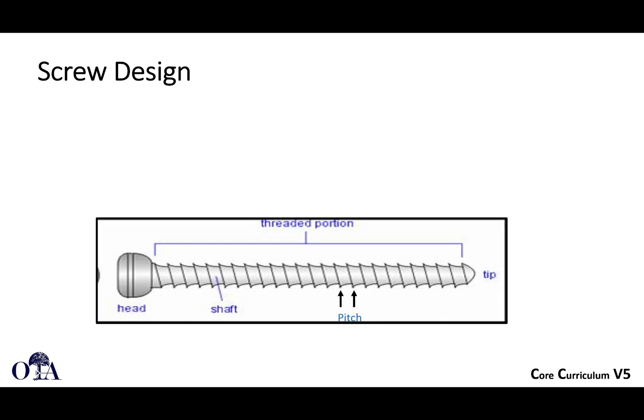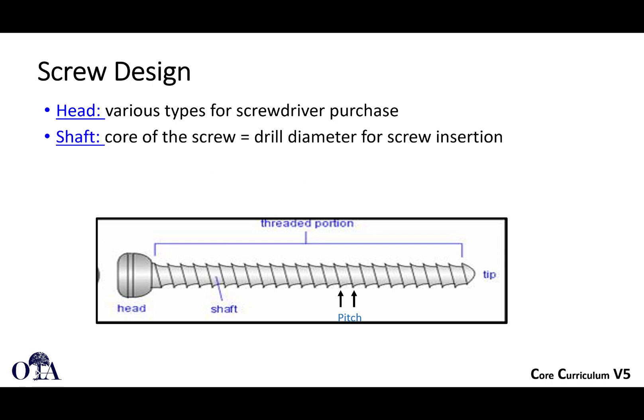A little bit about screw design. A screw has a screw head — there are headless screws as well, but the average screw has a head. There's a screw shaft, and a threaded portion which could be the full length of the screw; some screws are partially threaded. There's a certain pitch — the angle of the screw threads to the shaft. The head is where you place your screwdriver for purchase.